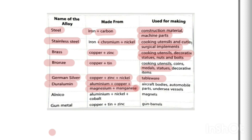Duralumin is light, corrosion-resistant, strong, and hard, so it is used for making aircraft bodies, automobile parts, and undersea vessels. Alnico is another commonly used alloy — as you can see in its spelling, 'Al' stands for aluminium, 'Ni' for nickel, and 'Co' for cobalt. Alnico is used as a magnet — it is the type of magnet we commonly use.